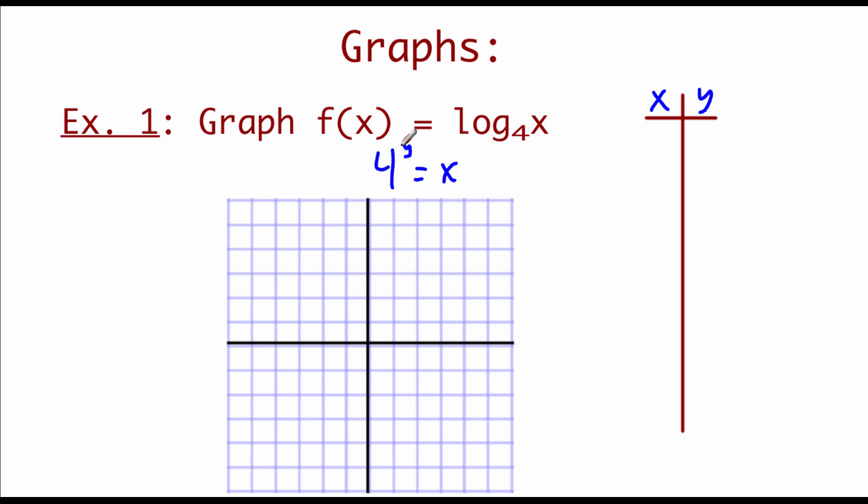I'm actually going to plug in some y values and end up getting back an x value. So if I plugged in a y value of 0, 4 to the 0 power would give me 1 as that x value. If I plugged in a first power, 4 to the first power is just 4. If I plugged in 2, we'd get 16, but that's not going to show up on our graph. So let's start heading the other direction. If we plug in negative 1, 4 to the negative first power ends up being 1 fourth. If we tried negative 2, 4 to the negative second power is 1 sixteenth.